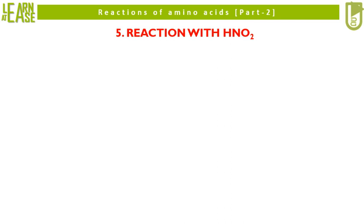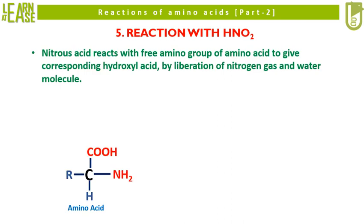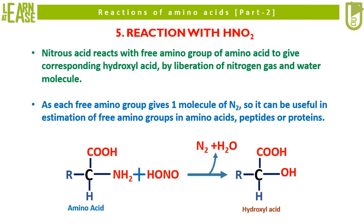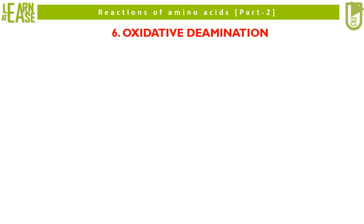Now let me explain the fifth reaction, that is reaction with HNO2. Nitrous acid reacts with the free amino group of amino acid to give the corresponding hydroxyl acid by liberation of nitrogen gas and water molecule. As each free amino group gives one molecule of nitrogen gas, it can be useful in estimation of free amino groups in amino acids, peptides, or proteins. Thus on reaction with HNO2, amino acid gets converted to hydroxyl acid. Carefully see the reaction to understand the mechanics of the reaction.